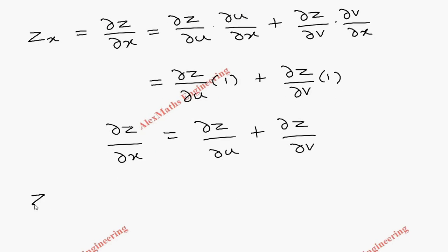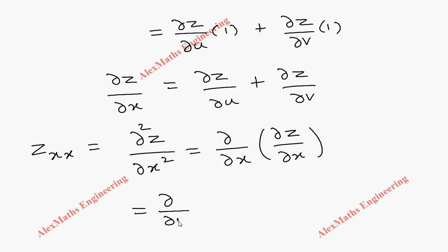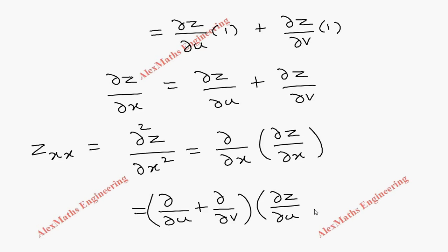Now we are going to find zxx, which is ∂²z/∂x², which is ∂/∂x of (∂z/∂x). We have two terms: ∂/∂x without z, and ∂z/∂x with z. The without-z part we write as ∂/∂u plus ∂/∂v, and with z it is ∂z/∂u plus ∂z/∂v.